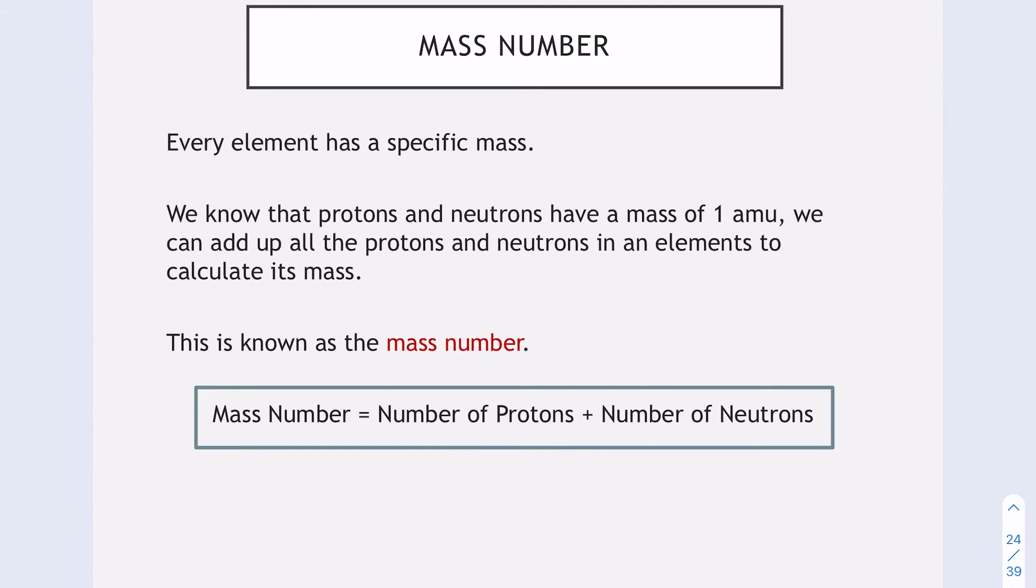Another important number is the mass number. Every element has a specific mass. We know that protons and neutrons have a mass of 1, so we can add up all the protons and neutrons in an element to calculate its mass. This is called the mass number. So your mass number is the number of protons plus the number of neutrons.